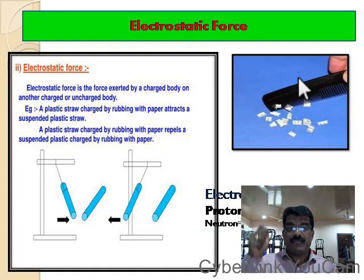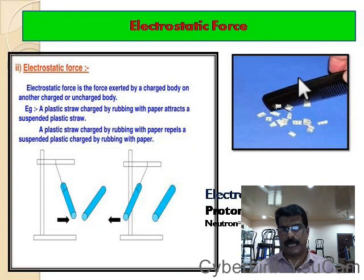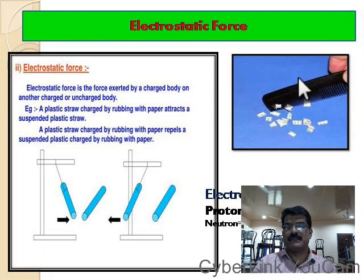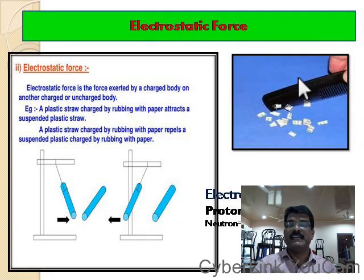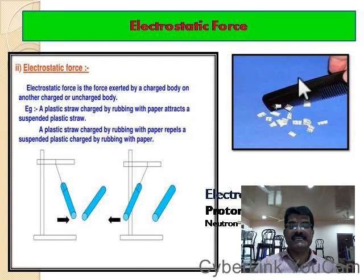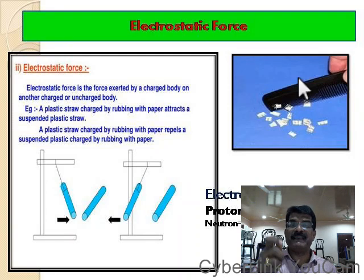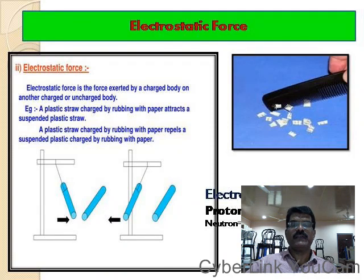When we rub a comb, it acquires a positive or negative charge, making it a charged body. When that charged comb is brought near pieces of paper, it attracts them because of the electrostatic force. A charged object that attracts or repels another charged body or a neutral body exerts what is called the electrostatic force.